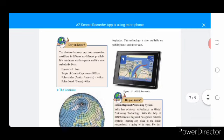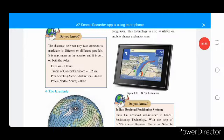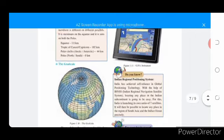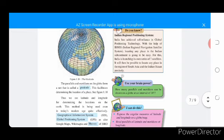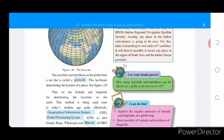The distance between any two consecutive meridians is different on different parallels. It is maximum on the equator and it is zero on both poles. Equator 111 kilometers, Tropic of Cancer and Capricorn 102 kilometers, polar circles Arctic or Antarctic 44 kilometers, poles north or south zero kilometers. Graticules: the parallels and meridians on the globe form a net that is called graticules. This facilitates determining the location of a place. We see in figure 1.10.